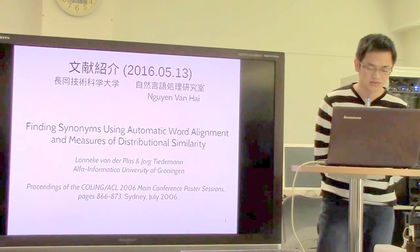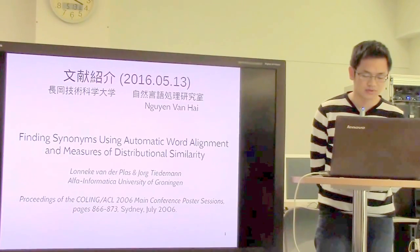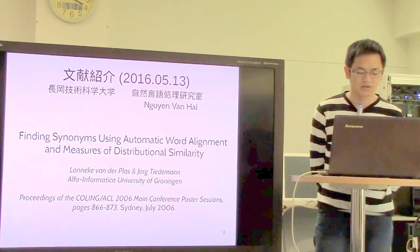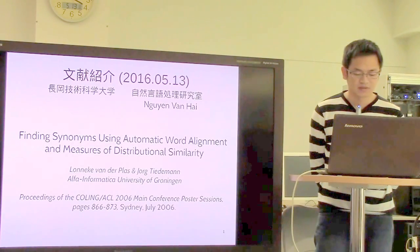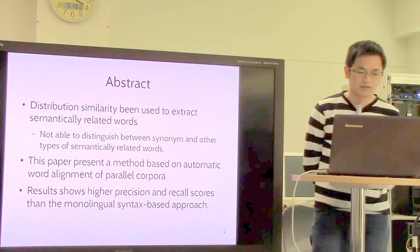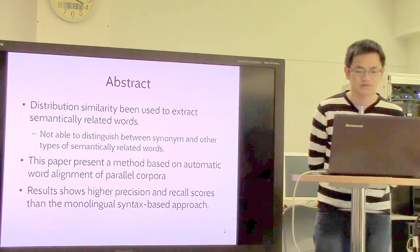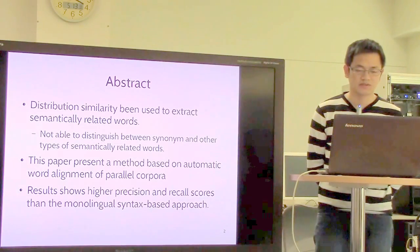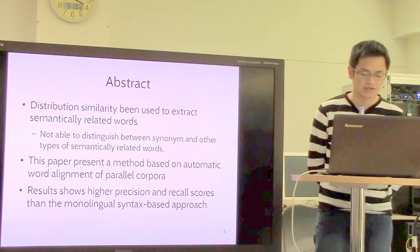As we know, many proposals exist to extract semantic words using measures of distribution similarity. But this distribution similarity is not able to distinguish between synonyms and other types of semantically related words, such as antonyms, hypernyms, and hyponyms.